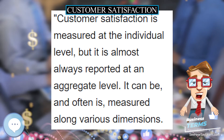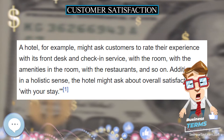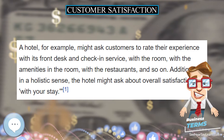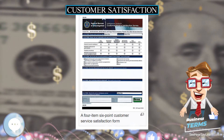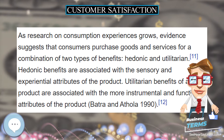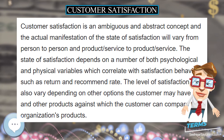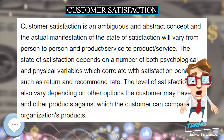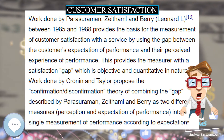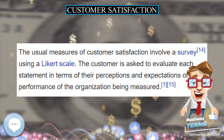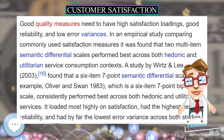The usual measures of customer satisfaction involve a survey using a Likert scale. The customer is asked to evaluate each statement in terms of their perceptions and expectations of performance of the organization being measured. Good quality measures need to have high satisfaction loadings, good reliability, and low error variances. In an empirical study comparing commonly used satisfaction measures, it was found that two multi-item semantic differential scales performed best across both hedonic and utilitarian service consumption contexts.